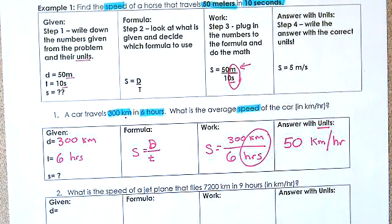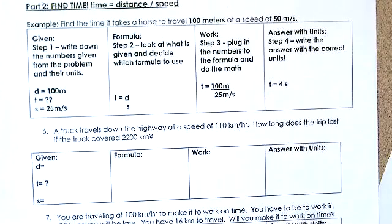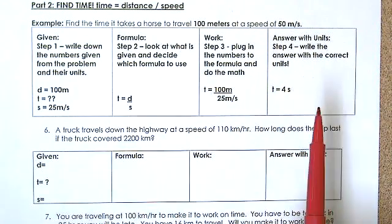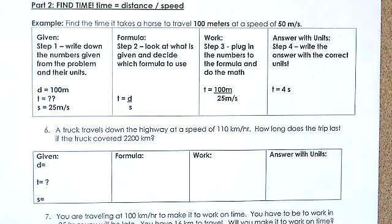Now flip to the second page, Part 2, and we'll do some examples finding time using a different formula. We'll read the sentence, highlight the important information, fill in the given values, work it out, and write down the answer. The question says: find the time it takes a horse to travel 100 meters at a speed of 50 meters per second.